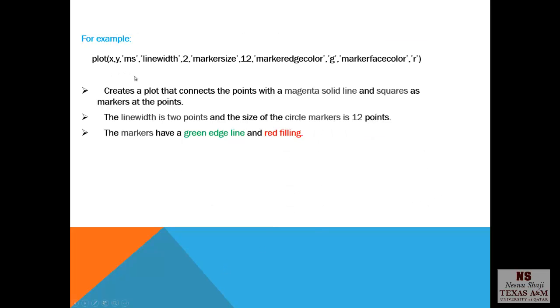This is another example where I have used the plot command. Plot x,y m s. It implies it connects the points with a magenta solid line and squares as markers at the points. LineWidth 2, so the line has a width or thickness 2. MarkerSize 12. MarkerEdgeColor should be green and MarkerFaceColor should be red.